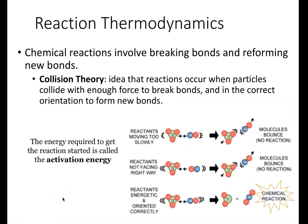How do chemical reactions occur? If we zoom in at the molecular level, what is actually going on? It's not just that you can mix two reactants together and boom, the chemical reaction occurs. There are two requirements for the reaction to occur. Bonds need to be broken and reformed. In order for that to happen, two reactants need to collide with A) enough force to break bonds, and B) in the correct orientation to form the new bonds.